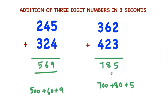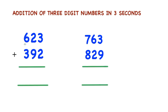In this way you can calculate addition of 3-digit numbers in 3 seconds. Now we see another example: 623 plus 392. In the hundreds place, 6 is there — you consider 600. In the hundreds place, 3 is there — you consider 300. 600 plus 300 is 900.